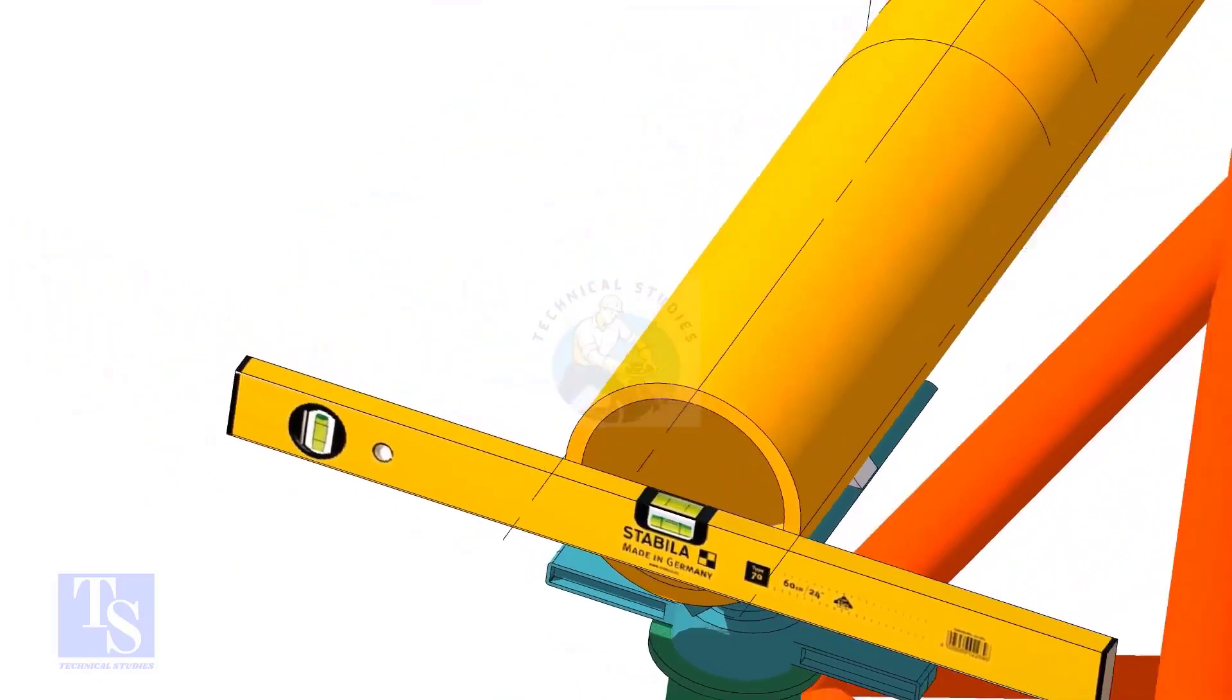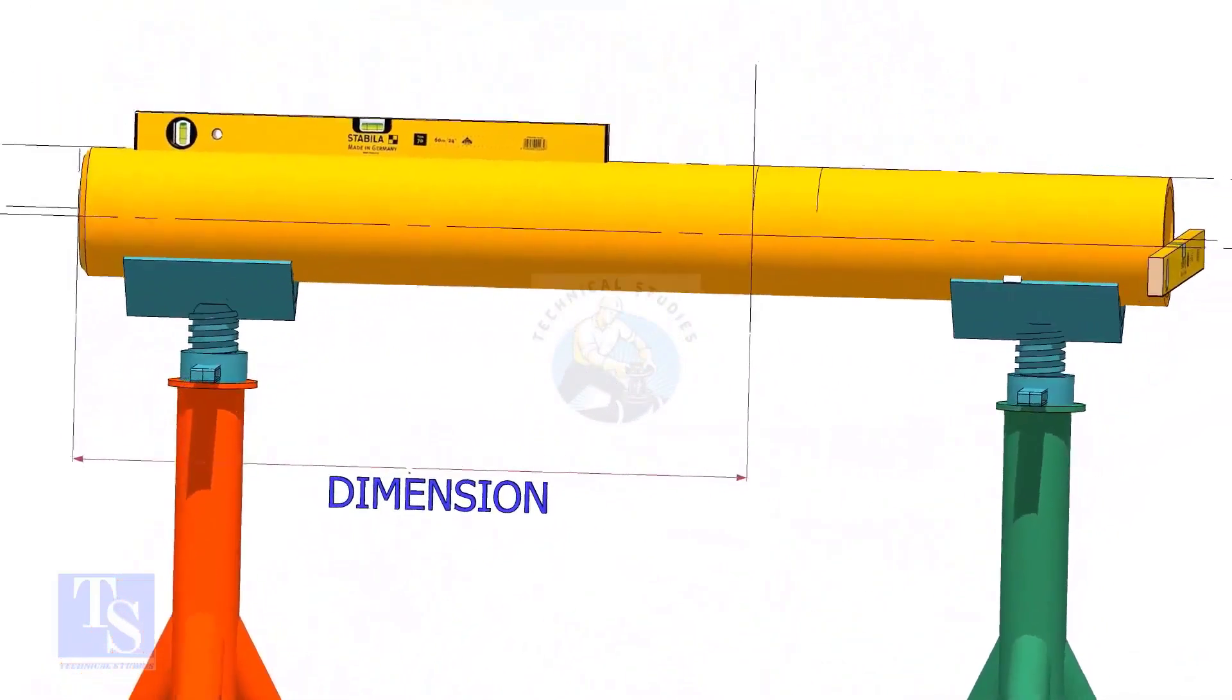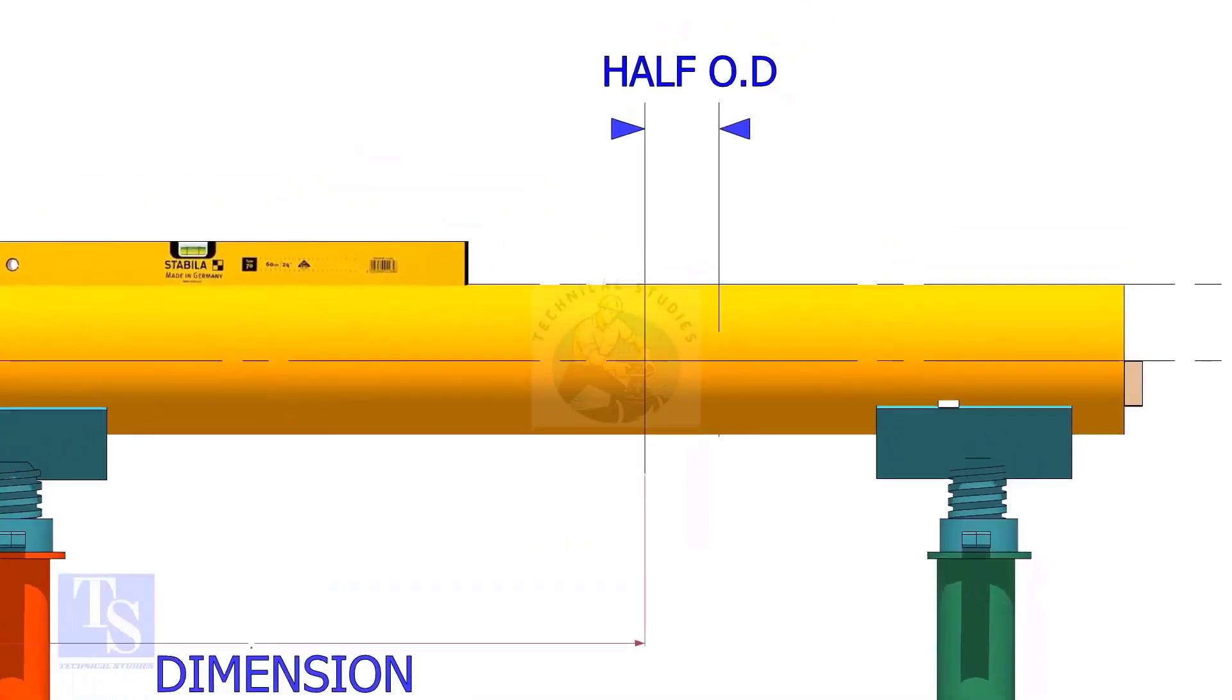Mark the center of the laterolet as per the drawing. Mark half OD of the header in the direction of the laterolet on the top of the pipe. This line is actually for inspection purposes only.